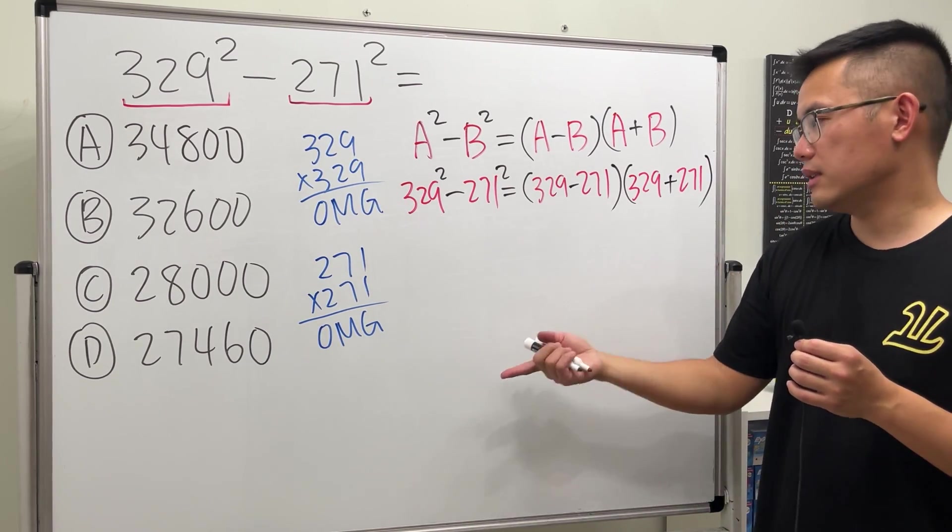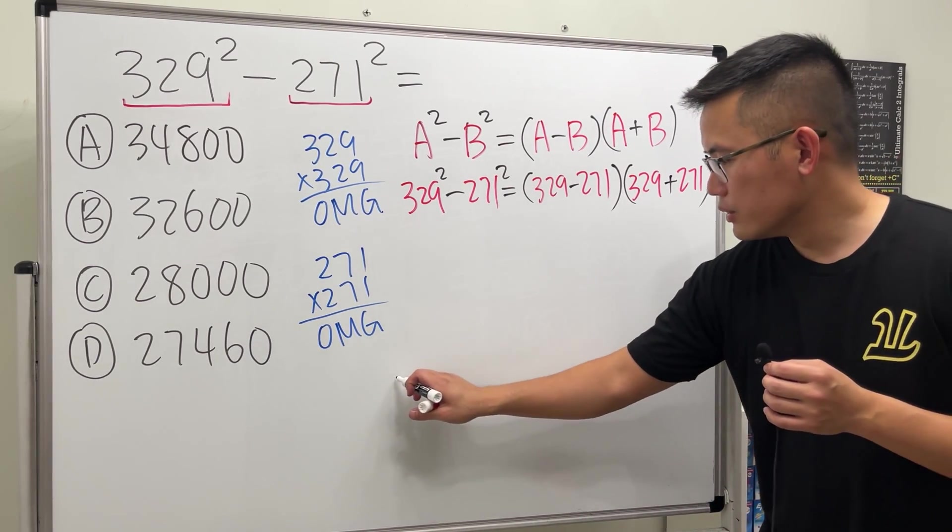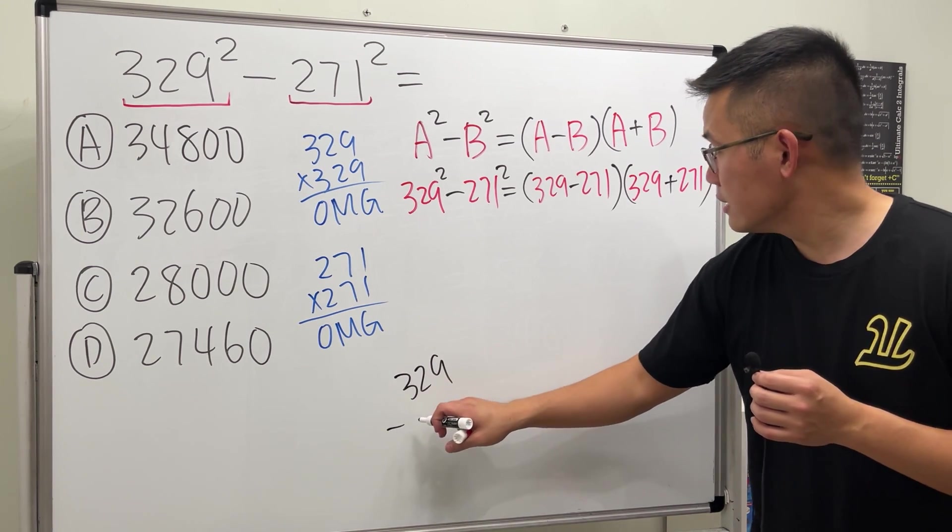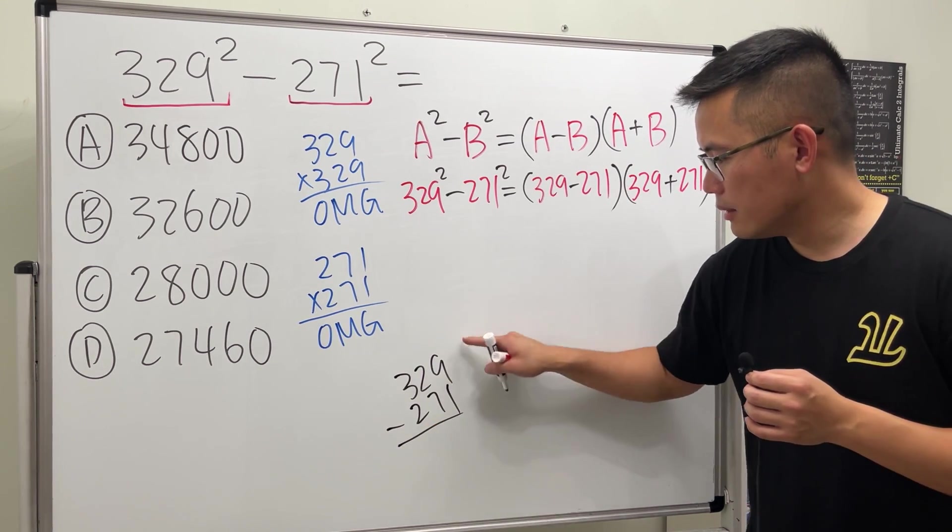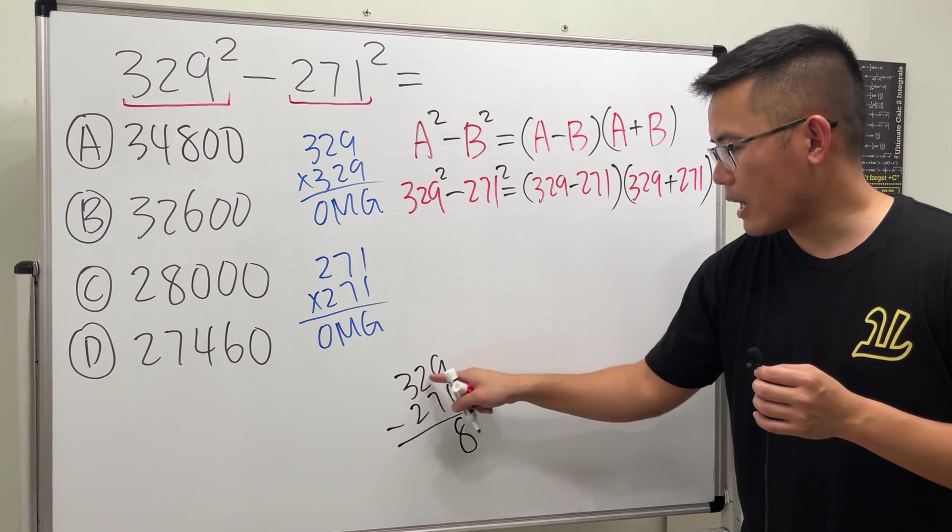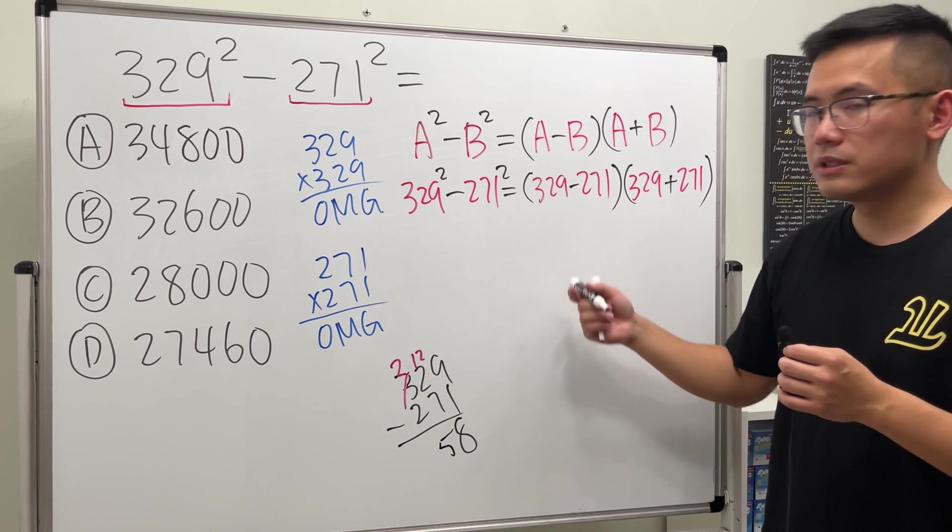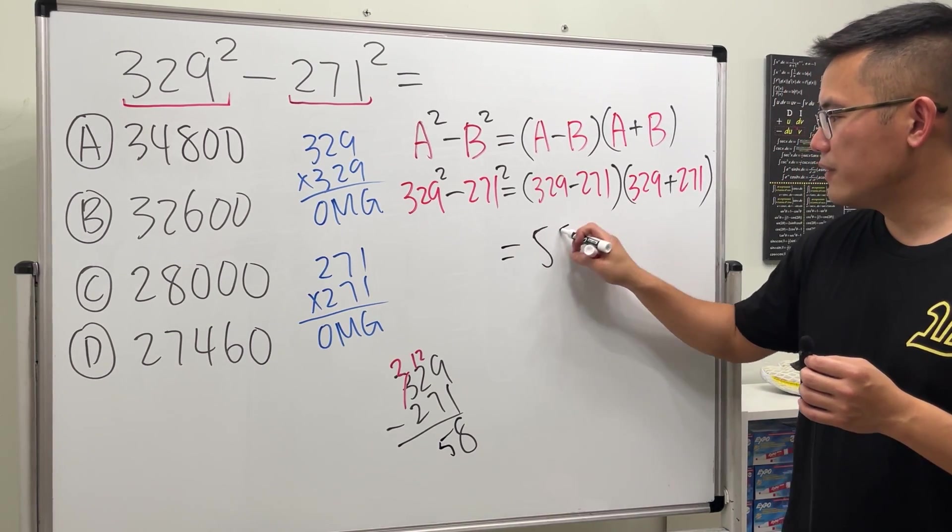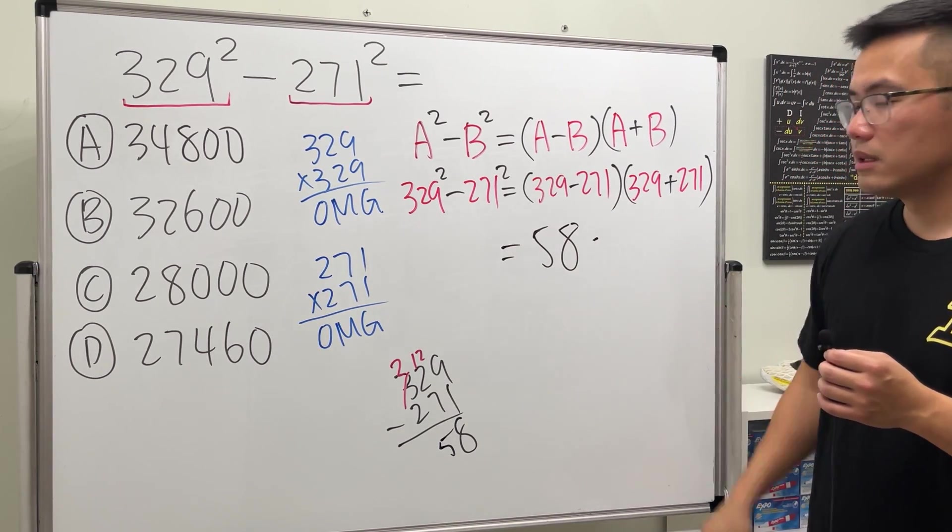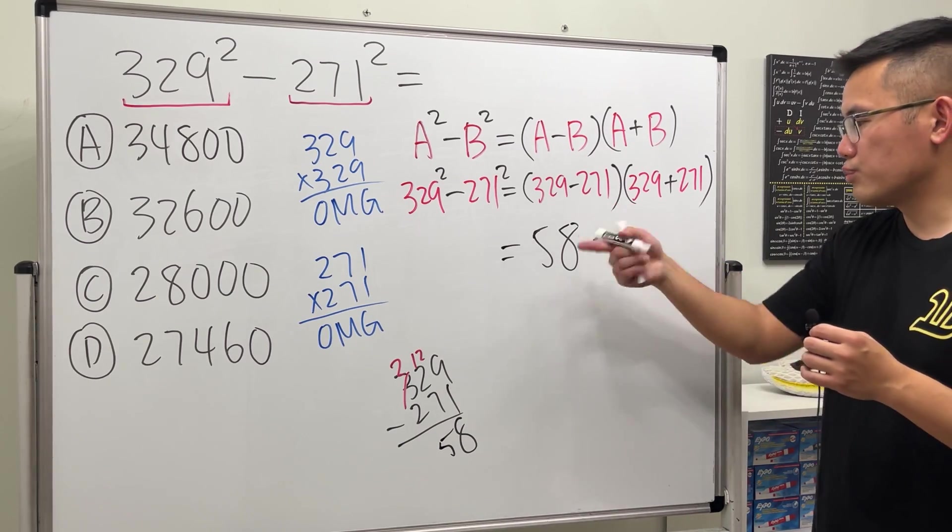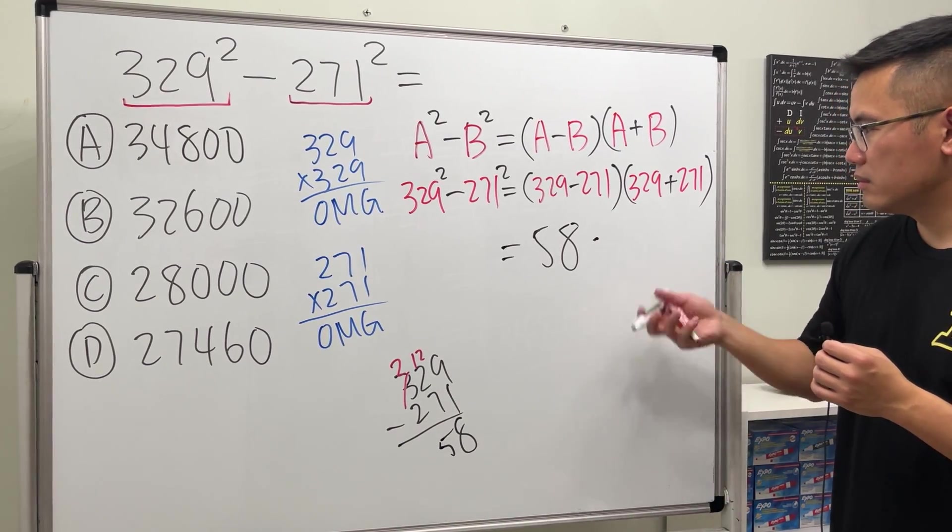Now can we do this? Okay, let's try right here. So 329 minus 271 - subtract, we need to borrow, so this becomes a 2 and subtract, this is 1, 2, and 5. Okay, the first parenthesis gives us 58.